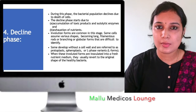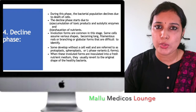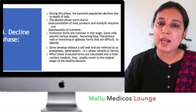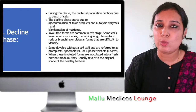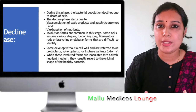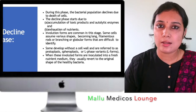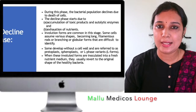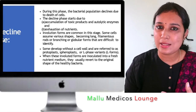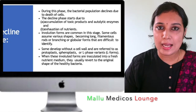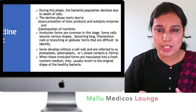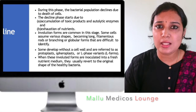The fourth and final phase is the decline phase, also called the phase of death. In this phase, the bacteria death rate increases because of a complete lack of nutrients and accumulation of metabolic toxic waste products. A characteristic feature of the decline phase is the appearance of involution forms — also called L-forms — where the cell wall is lost. The bacteria become morphologically irregular, showing long filamentous rods, branching forms, and globular forms, which make them difficult to identify.